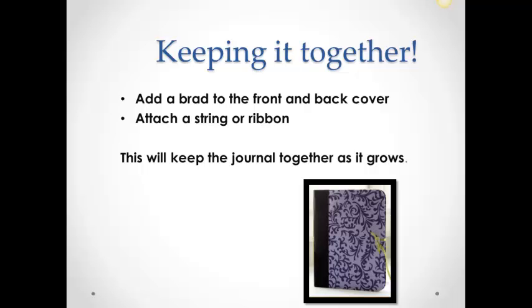It's critical to keep it all together. This is one method that can be used to keep student journals together as they grow. Another suggestion is a rubber band that is looped through a hole punched in the back cover and then used to mark or hold together pages. A ribbon can also be used similarly to mark pages.